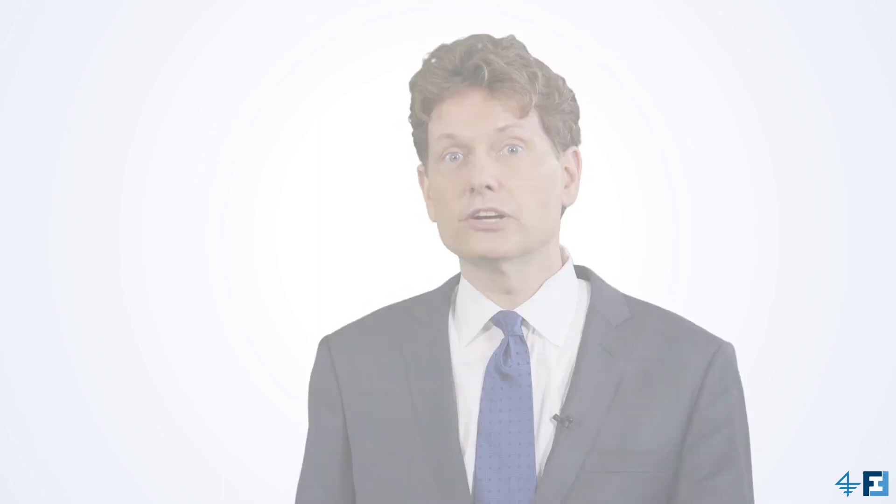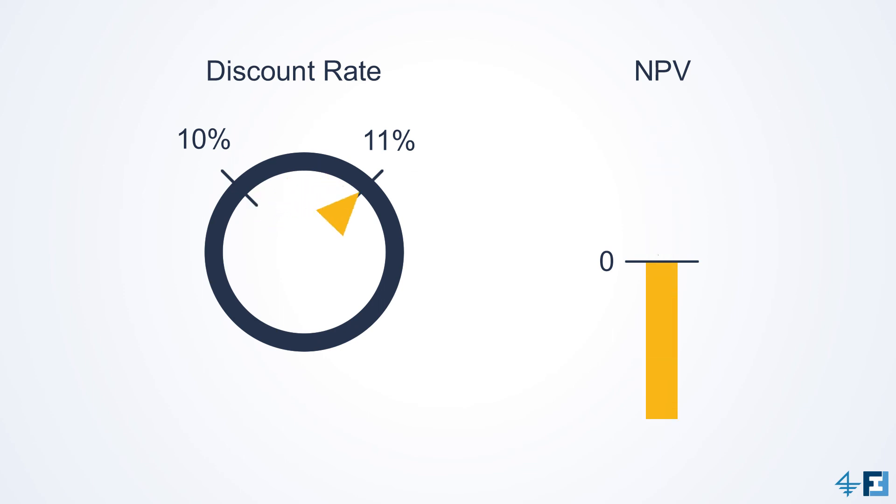And as you saw in the last module, the discount rate can matter a lot. A project that makes a lot of sense at 10% suddenly could make no sense at 11%. The NPV could go from very positive to very negative with just a small change in the discount rate.